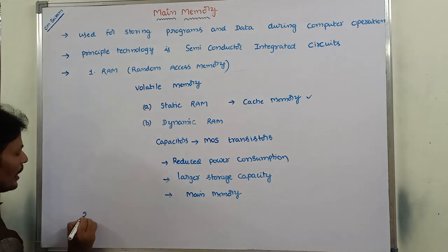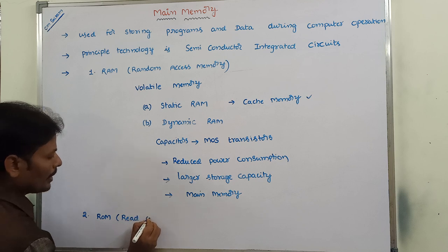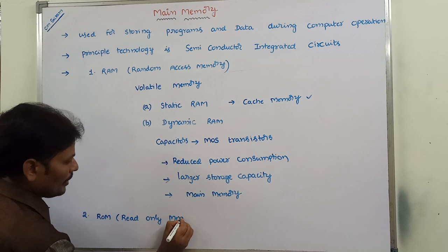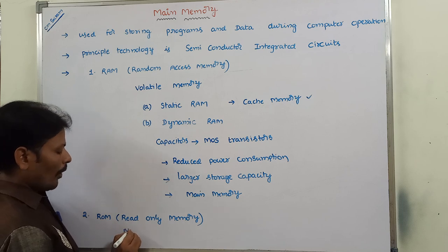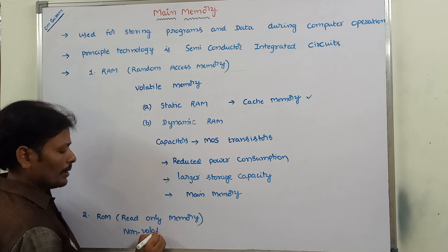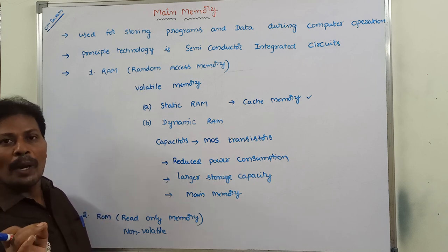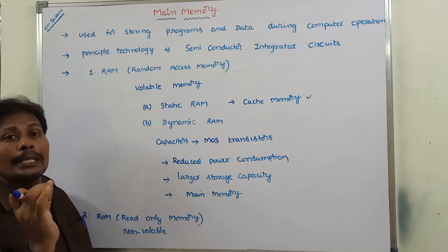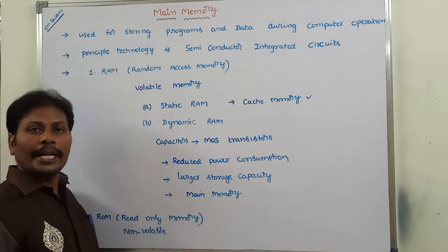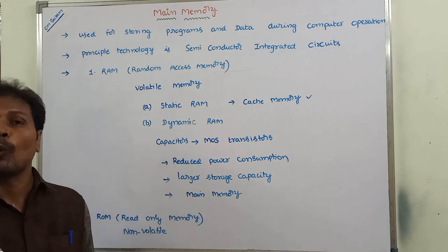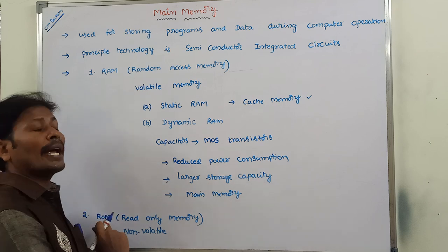The second type of memory is called ROM, which stands for Read-Only Memory. ROM is called as non-volatile memory. ROM stores the programs permanently inside the chip. ROM is a portion of main memory that is used for storing data and programs permanently. Hence, ROM, read-only memory, can be called as non-volatile memory.